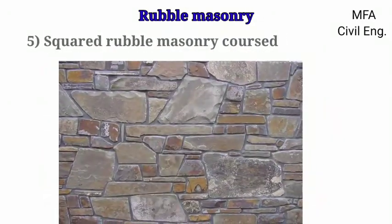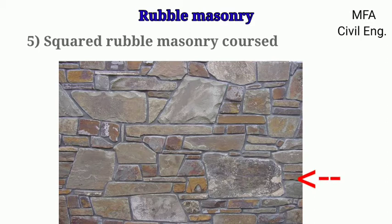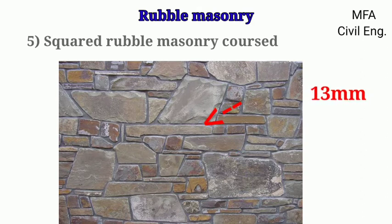In squared rubble masonry coursed, semi-dressed stones are used. These stones are arranged in regular courses. Stones of equal height should be used in a course, or two or more stones are kept above each other to make up the height of the course. The mortar joint should not exceed 13 mm and the stones used in the masonry should be uniform in color.